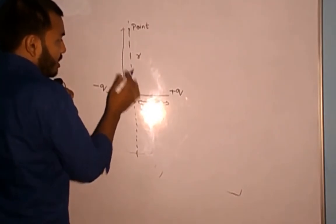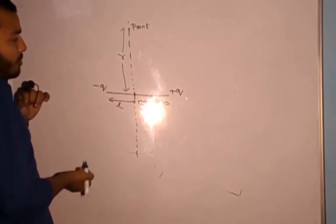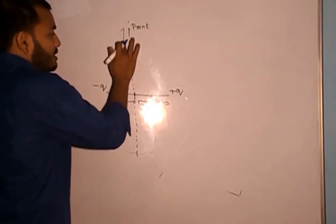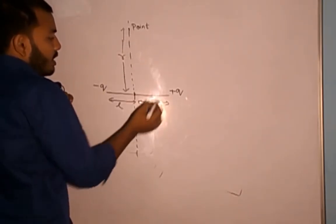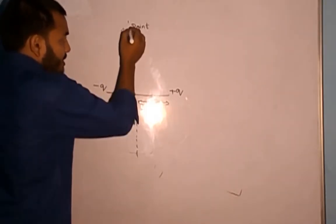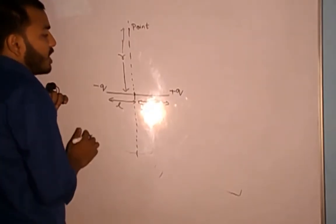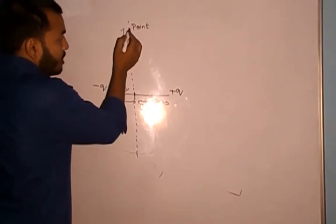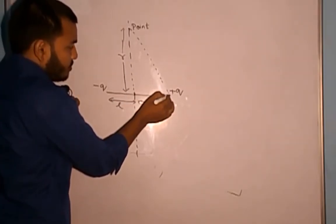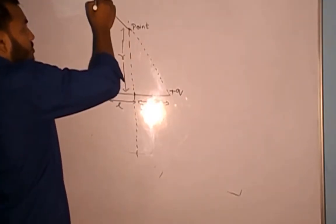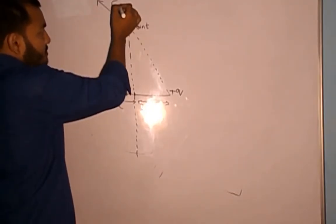I need to calculate the electric field at this point at distance R from the center of the dipole. The electric field at this point will be the vector sum of the electric field due to the positive charge +q and the negative charge -q. A positive charge repels, so the electric field is directed away from the positive charge.